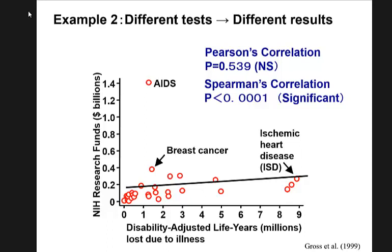We will come back to this graph to see which test to pick. If you pick a test simply because the p-value is smaller, that's a big no-no. Selection of a statistical test has nothing to do with the p-value.